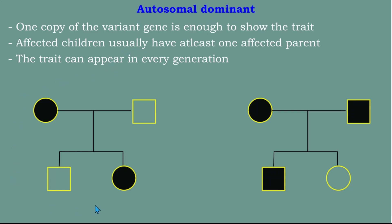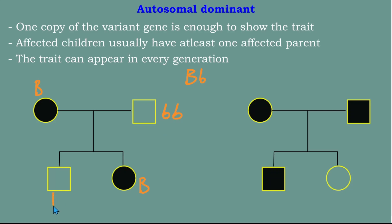Here is a small pedigree to show how we work with autosomal dominant. We are investigating brown eyes, which is dominant. Brown eye will be represented by capital B, and the recessive allele by small b. The woman here has brown eyes — she has capital B. Her daughter also has brown eyes, but her husband does not have this trait, so he has recessive alleles.